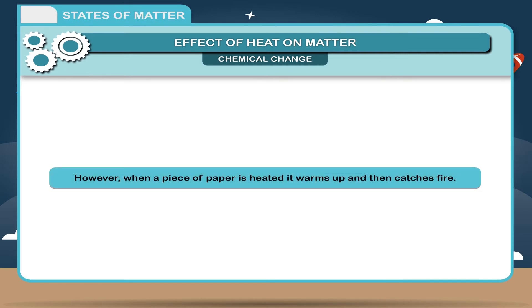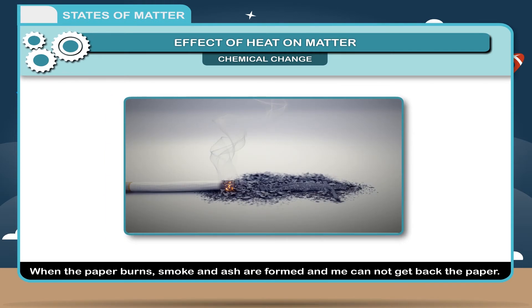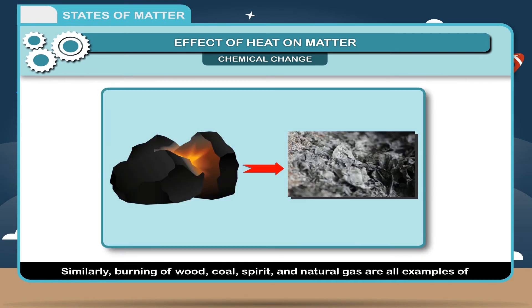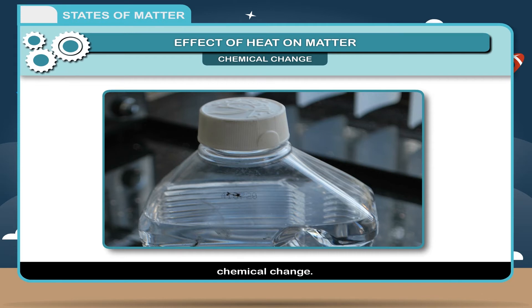However, when a piece of paper is heated, it warms up and then catches fire. When the paper burns, smoke and ash are formed and we cannot get back the paper. Similarly, burning of wood, coal, spirit, and natural gas are all examples of chemical change.